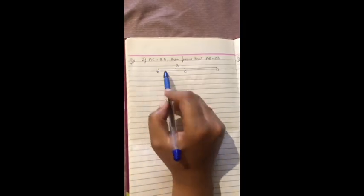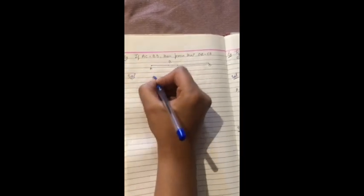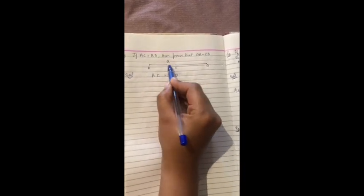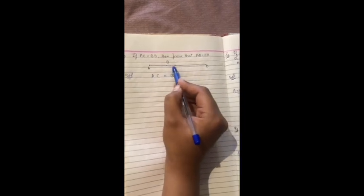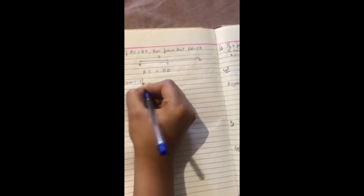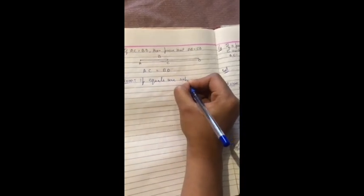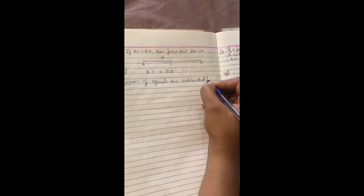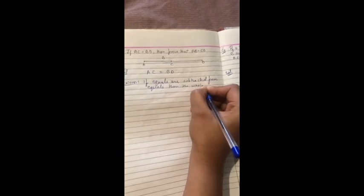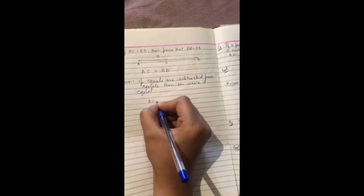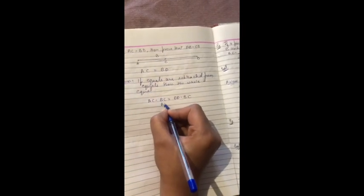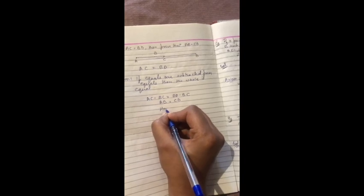The last one: if AC equals BD, then prove that AB equals CD. If we remove BC from both sides, AB will remain on one side and CD on the other. We have to subtract. That's why we are using the axiom: if equals are subtracted from equals, then the remainders are equal. That means AC minus BC equals BD minus BC. Subtracting from the left side gives AB, and from the right side gives CD. So AB equals CD. Hence proved.